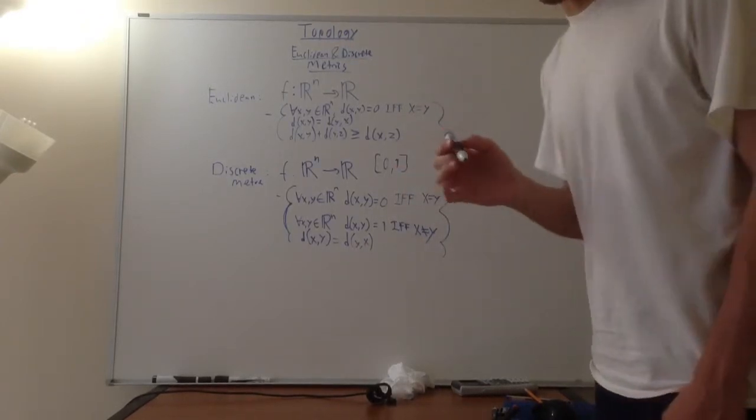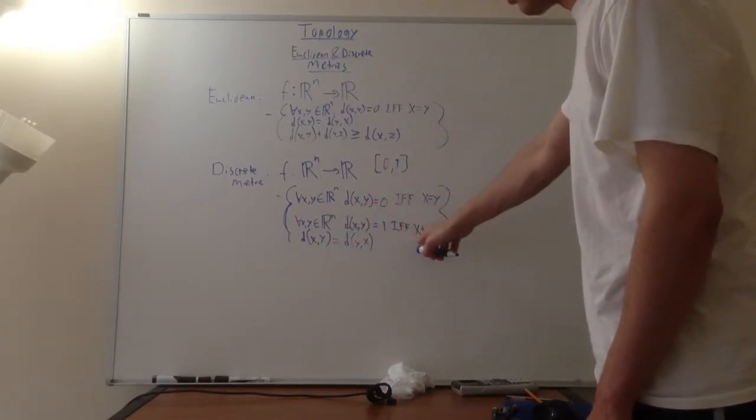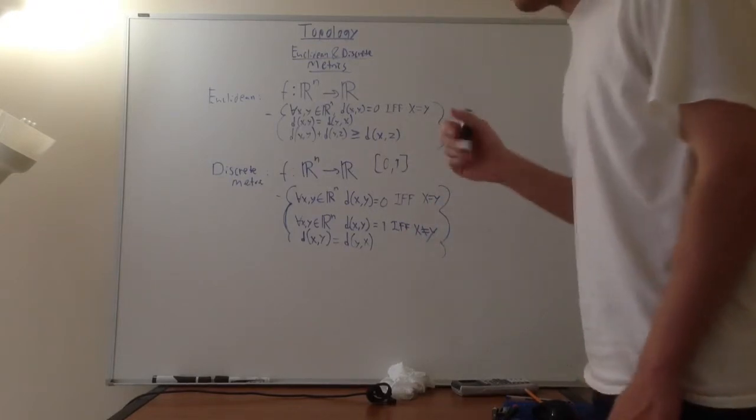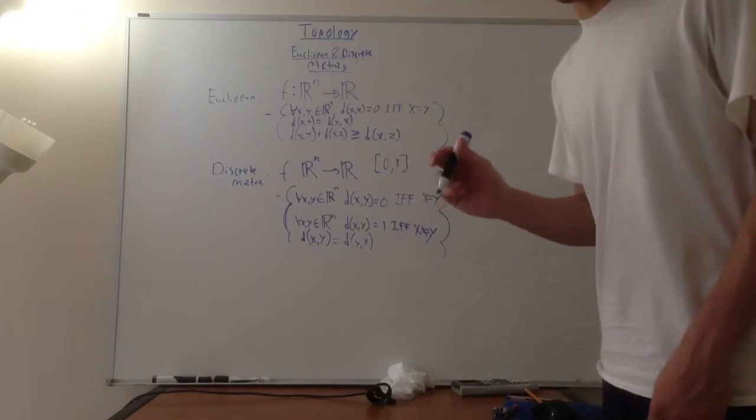Now, here's what's different about them. For every x and y in R^n, the distance between x and y is equal to 1 if and only if x is not equal to y. So, essentially, this means that no matter how, quote unquote, far away you go from a point, the distance will always be equal to 1.